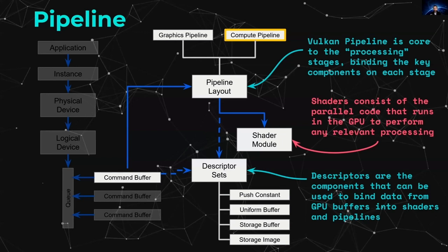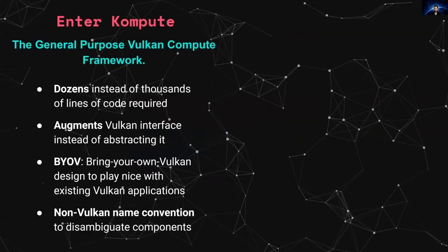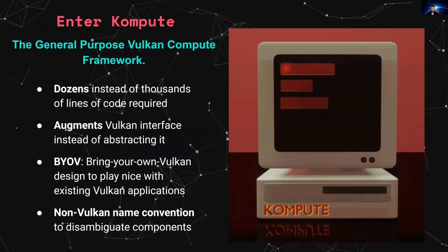You can await until execution has finished. Building the foundation code required to run a simple program in Vulkan takes from 500 to 2,000 lines of C++ code. This is the motivation for the Compute framework itself. Compute enables developers to get started interacting with the Vulkan SDK with dozens instead of thousands of lines of code.